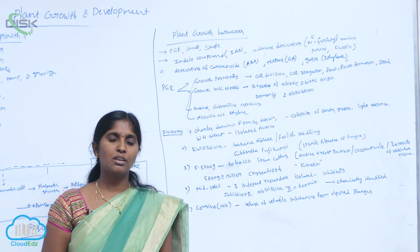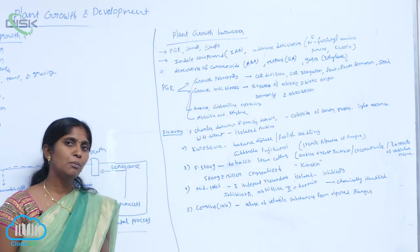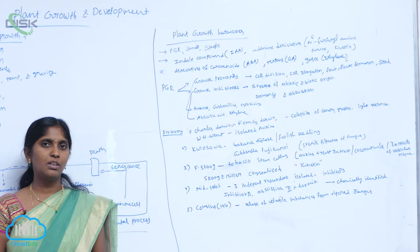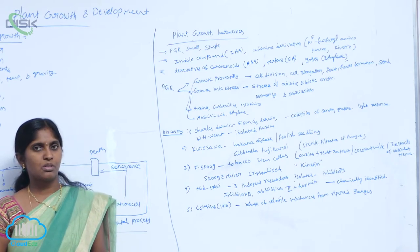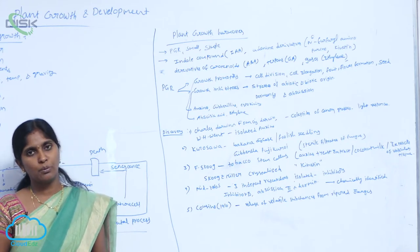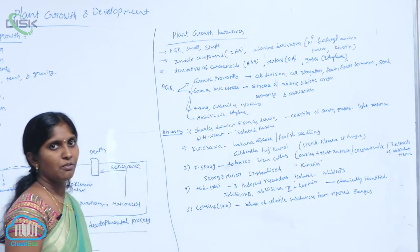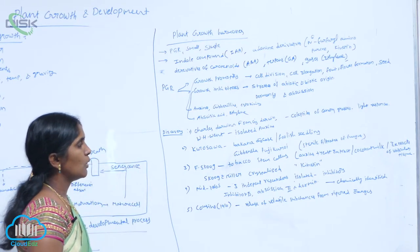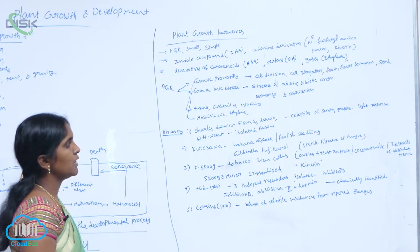What is coleoptile? Coleoptile is the early formed protective sheath for upcoming tissues, especially plumule. Coleoptile is protective layer for plumule. On the coleoptile of canary grass, they conducted the experiments.